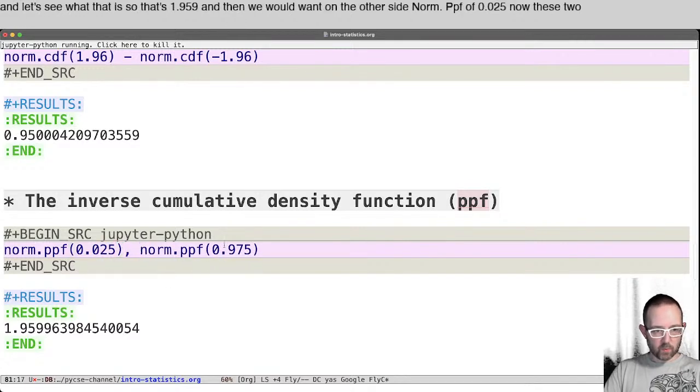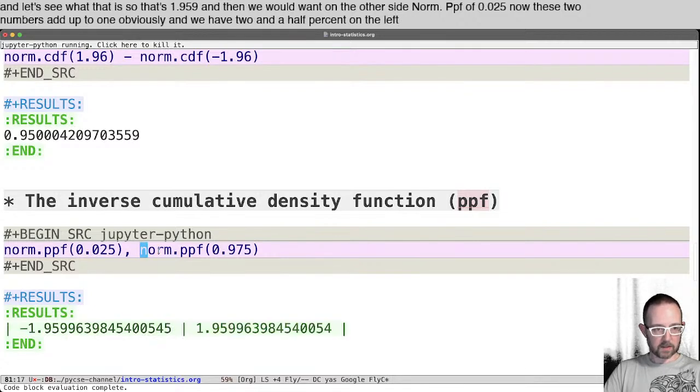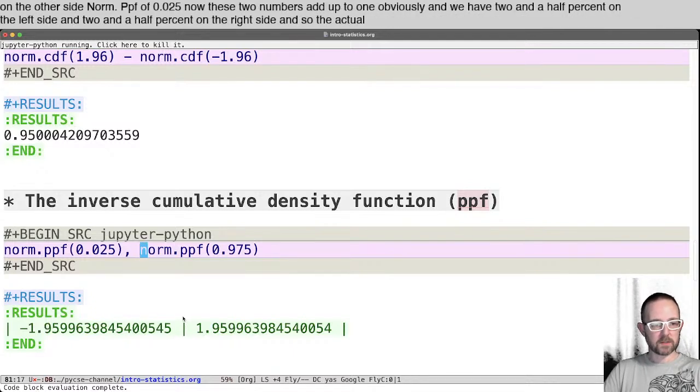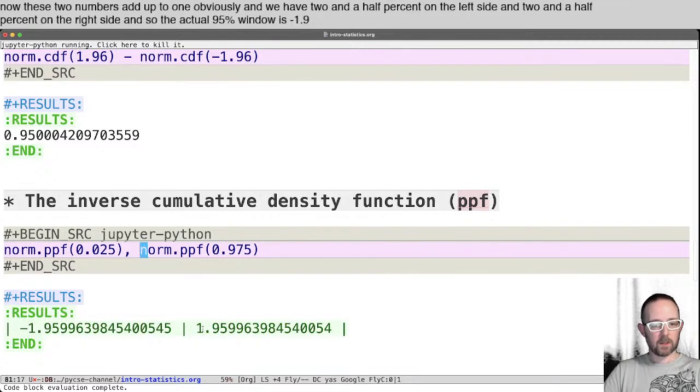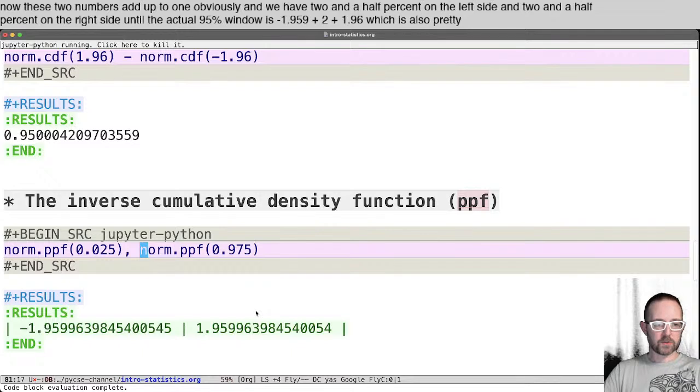Now these two numbers add up to one, obviously, and we have two and a half percent on the left side and two and a half percent on the right side. And so the actual 95% window is minus 1.9599, which is pretty close to 1.96, which is also pretty close to two.